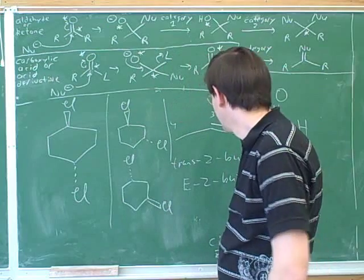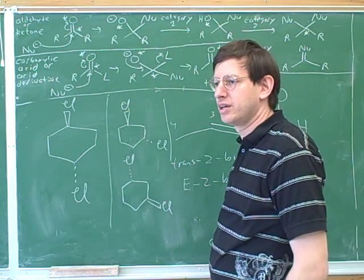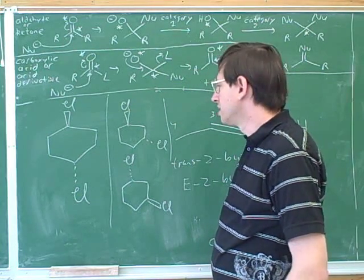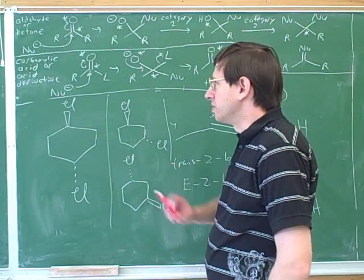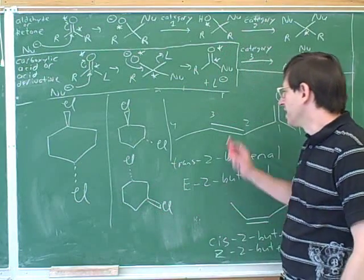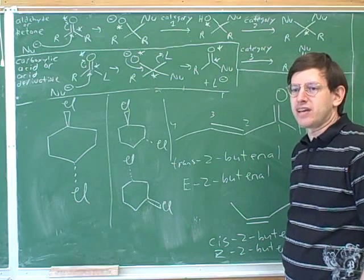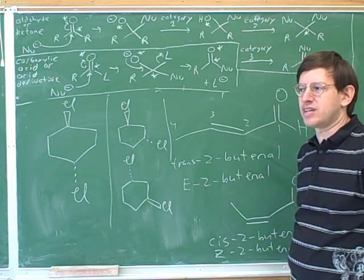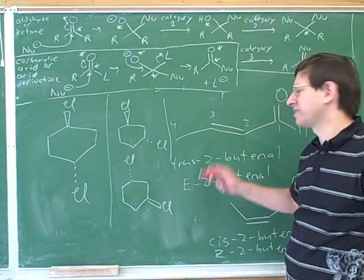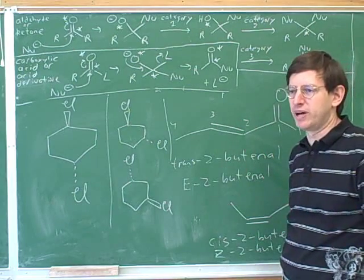Okay, so double bonds: E, Z always works. Dashed and wedged: R or S, or cis and trans. Yeah, so let's go over that again. A double bond, E and Z is always safe. Cis and trans sometimes works, but sometimes not. So it's best to use E and Z for double bonds.